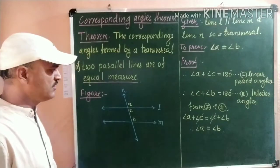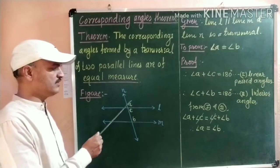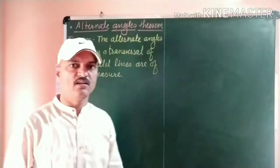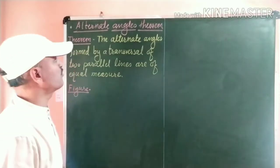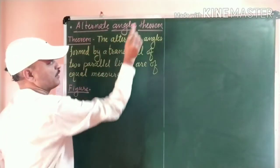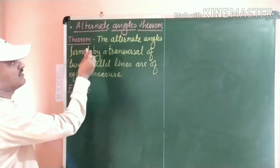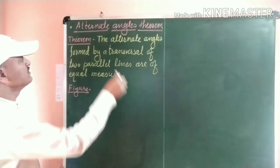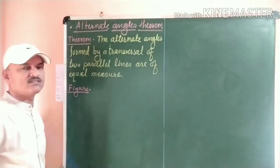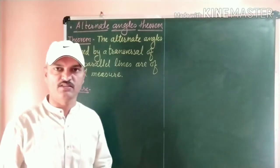Do you understand? When two parallel lines are intersected by a transversal, their corresponding angles are equal in measure. Let us see the next property of parallel lines — that is the alternate angles theorem. The statement is: the alternate angles formed by a transversal of two parallel lines are of equal measure.